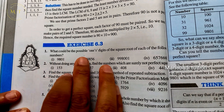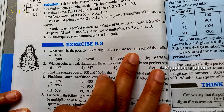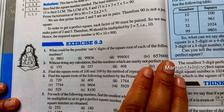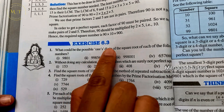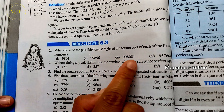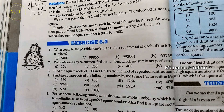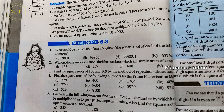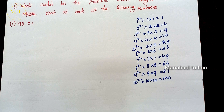The first question is: what could be the possible unit digit of the square root of each of the following numbers? We are given four numbers, and we need to find only the last digit — the unit place digit — of the square root.